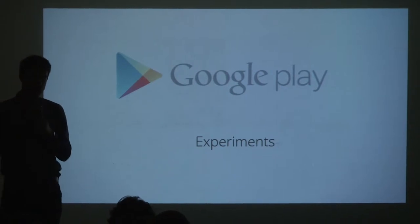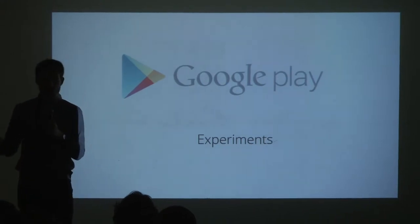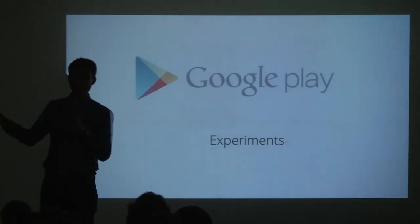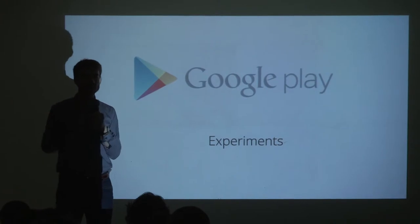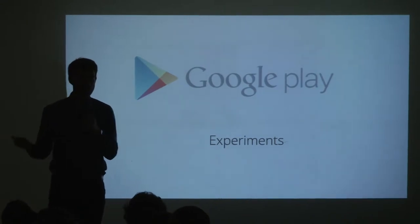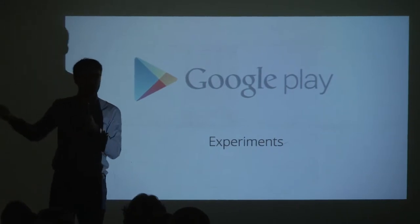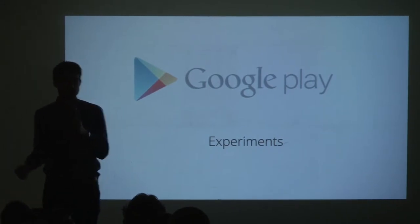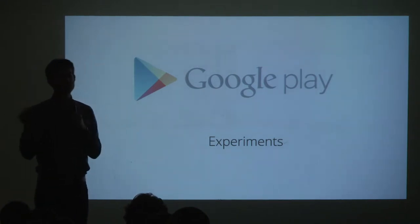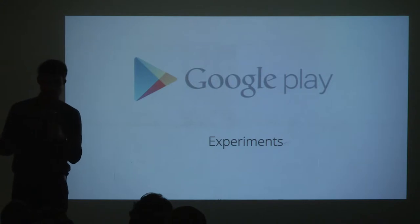Before we begin, maybe a small recap on A/B testing. A/B testing is when you have a page, you make one version and another version, and you put a certain percentage of your visitors on one page and the other percentage on the other page. You see what performs better depending on what you want the user to do. Here, you want people to download your app, so you see which page is converting better. And it's important to do A/B testing rather than just changing things.